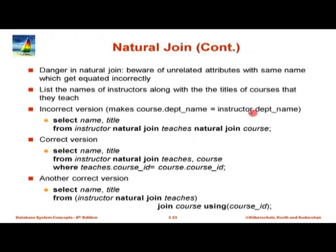This results in losing tuples. Suppose an instructor is from the computer science department but taught an EE course. The course department name is EE, the instructor department name is CS, and this condition removes that tuple from the result. You might think testing should have caught this, but most of the time people teach courses from their own department. If your test data did not have someone from CS teaching in EE, the query would give exactly the right answer. But it is not a correct query - when the data changes, you may silently lose data.